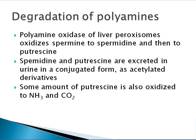Degradation of polyamines: polyamine oxidases in liver peroxisomes oxidize spermine to spermidine and then to putrescine. Spermidine and putrescine are excreted in urine in a conjugated form as acetylated derivatives. Some amounts of putrescine are also oxidized to amine and carbon dioxide.